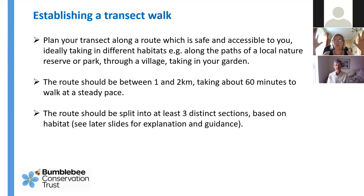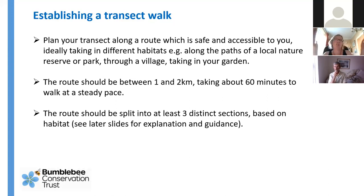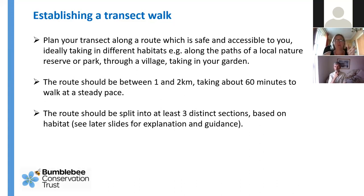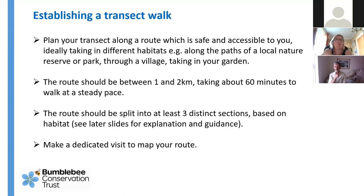Within your transect you should have three distinct sections based on habitat. For example, you could start in a village churchyard managed as a meadow, then along a country lane with hedgerows, then through a park and back to your house - so you've got some distinct differences along the way. Try and map your route before you brave the BeeWalk website so you know your sections and can visualize your route, because you've got to draw it onto the website.